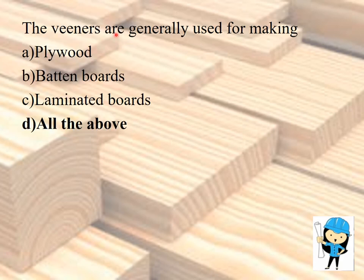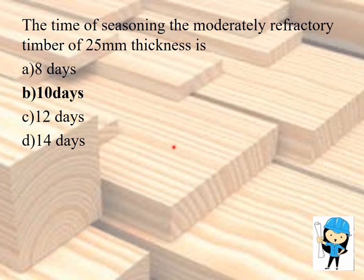Veneers are generally used for making plywood, batten boards, and laminated boards — the answer is all of the above. The time of seasoning for moderately refractive timber of 25 mm thickness is 10 days.